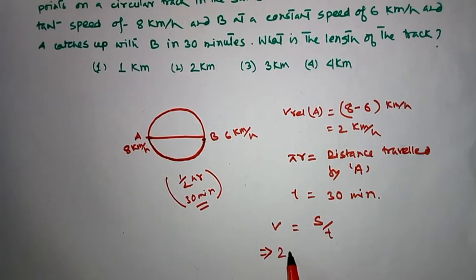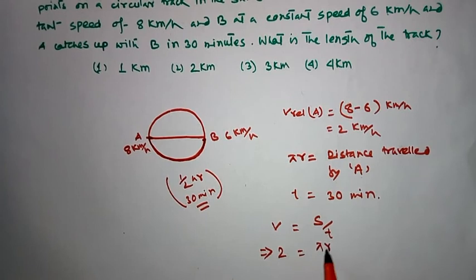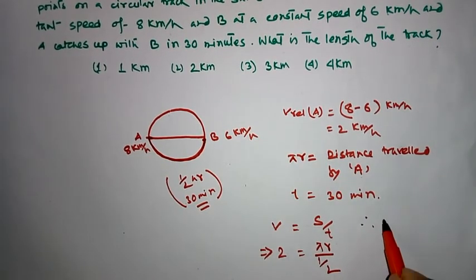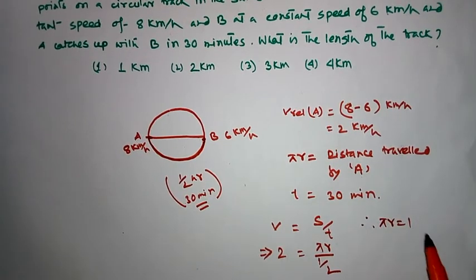So, it is πr and t will be half, therefore πr equals 1 km.